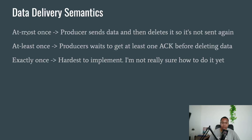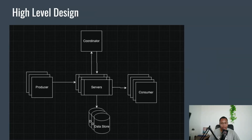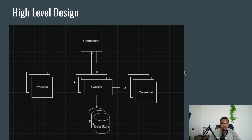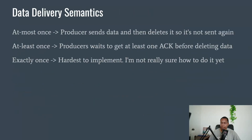For data delivery: at most once, it'll send the data and then delete it so it's not sent again. At least once - producers wait to get at least one ACK before they delete the data. Exactly once is more difficult to implement. This is Alex Hsu and Stanley Chang's version of how to design a message queue. It's really an intro into scalability, so it's a very good entry-level type of problem, very good for mid-level interviews. There are a lot of follow-ups you could ask too. Thanks for watching.